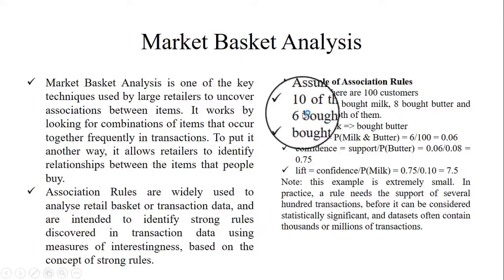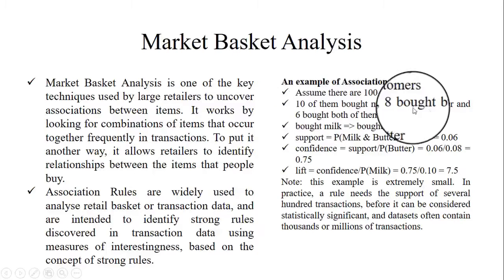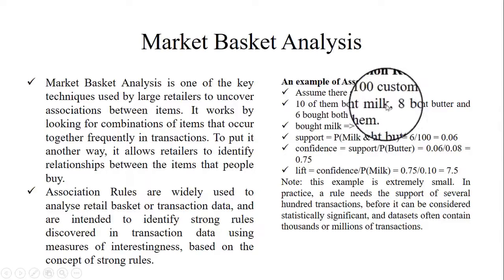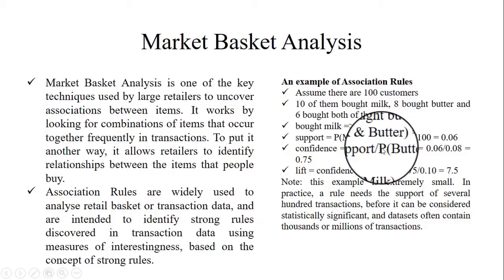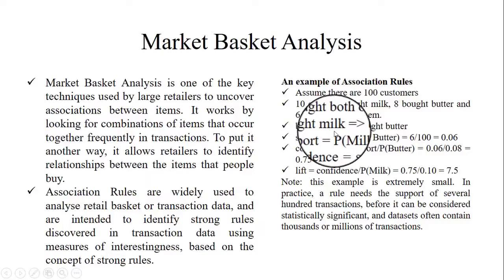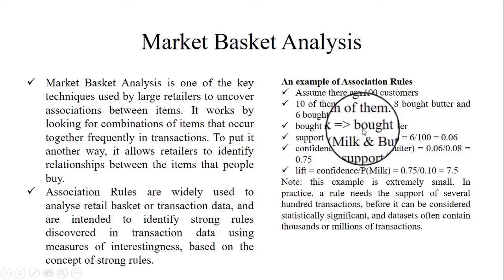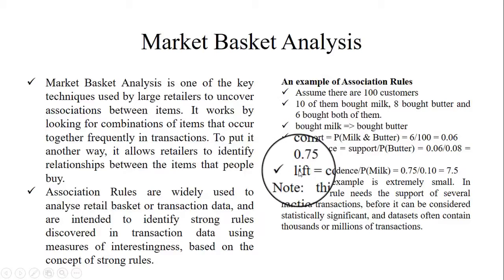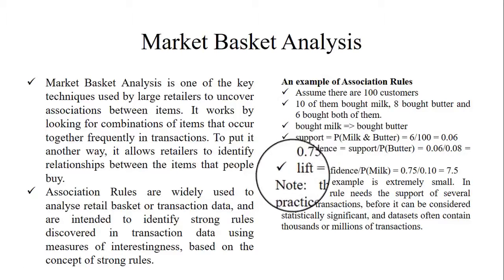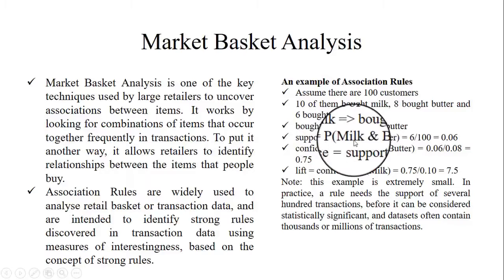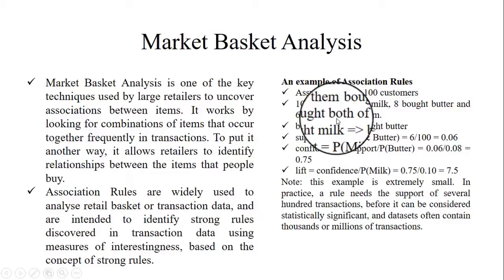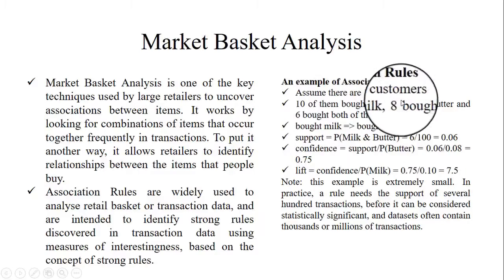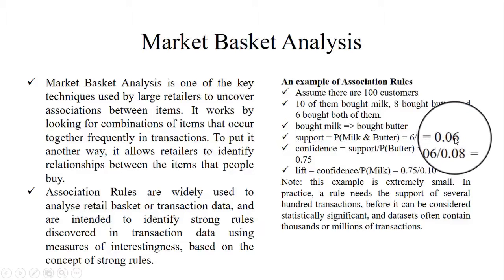For example, assume there are 100 customers: 10 of them bought milk, 8 bought butter, and 6 of them bought both. The association rule is: bought milk corresponds to bought butter. The support is equal to the probability of milk and butter — that is, 6 divided by the total number of customers 100, which corresponds to 0.06.